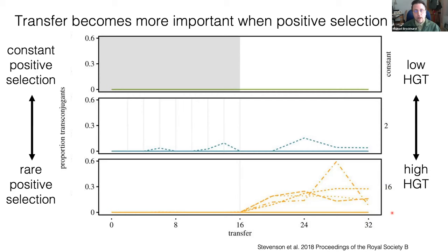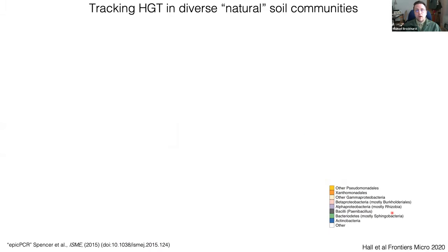To summarize that section: selection varies the mode of inheritance of a plasmid, and the frequency of selection for the plasmid alters the relative importance of those modes of inheritance. When positive selection is less frequent, infectious transmission becomes more important and is really critical for maintaining the plasmid even in the absence of any encoded benefit.